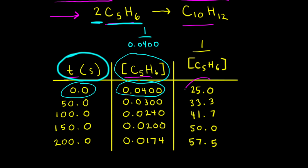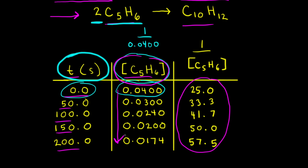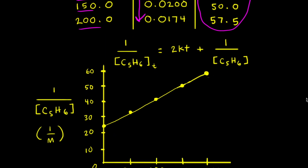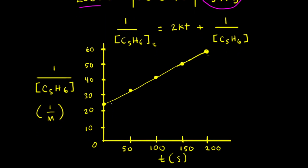To save some time, I've filled in the rest of this column. Notice as time increases from 0 to 50 to 100 to 150 to 200 seconds, the concentration of cyclopentadiene decreases because cyclopentadiene is turning into dicyclopentadiene. Next, we need to graph our data with one over the concentration of cyclopentadiene on the Y axis and time on the X axis. When time equals zero, one over the concentration of cyclopentadiene is 25.0.